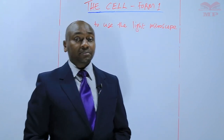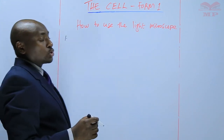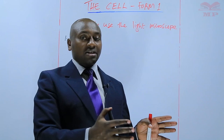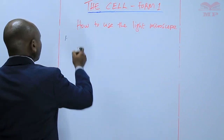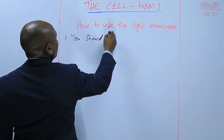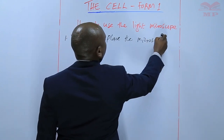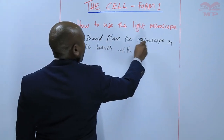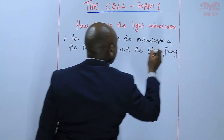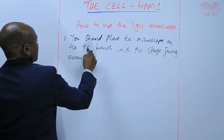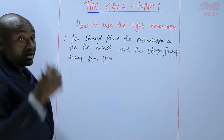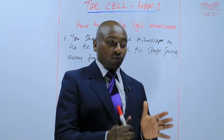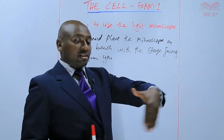The first thing is that the learner should place the microscope on the bench with the stage facing away from you. This is very important because when the stage is facing away from you, you do not obstruct the light. You should be on the side that has the arm, and then on the other side the stage should be away.